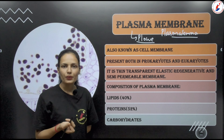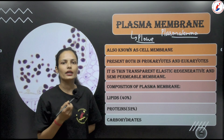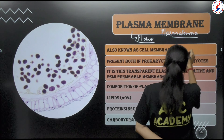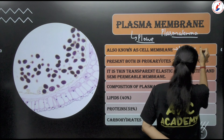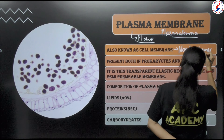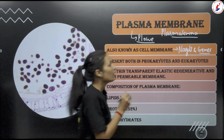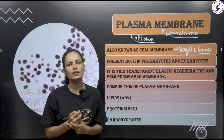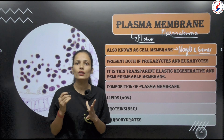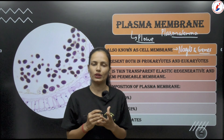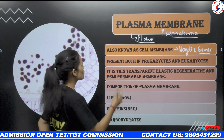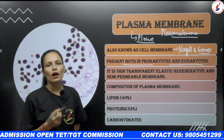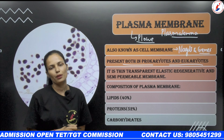Plasma membrane is also known as cell membrane. The term 'cell membrane' was given by Nageli and Kramer. Plasma membrane is present in both prokaryotes and eukaryotes — in any living cell, plasma membrane will be present, so it is the absolute requirement of the cell.